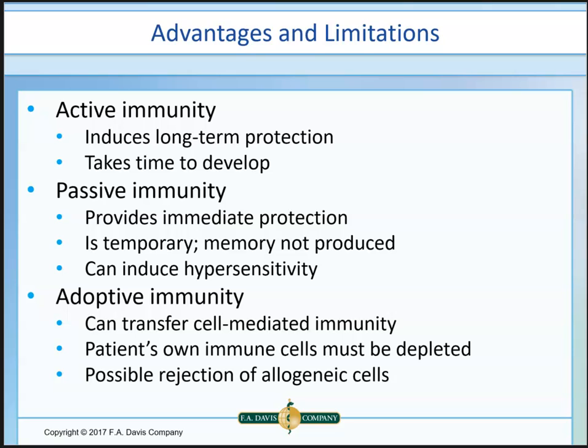Active immunity provides very long-term protection — a short burst of IgM followed by prolonged IgG — but you must go through the disease state to develop those antibodies. Passive immunity provides immediate protection, but it's only temporary, lasting a few weeks, because no memory cells are produced. There's also risk of hypersensitivity. Adoptive immunity allows transfer of cell-mediated immunity, but carries risk of graft rejection and graft-versus-host disease, and is generally only used in people who lack a functional immune system.